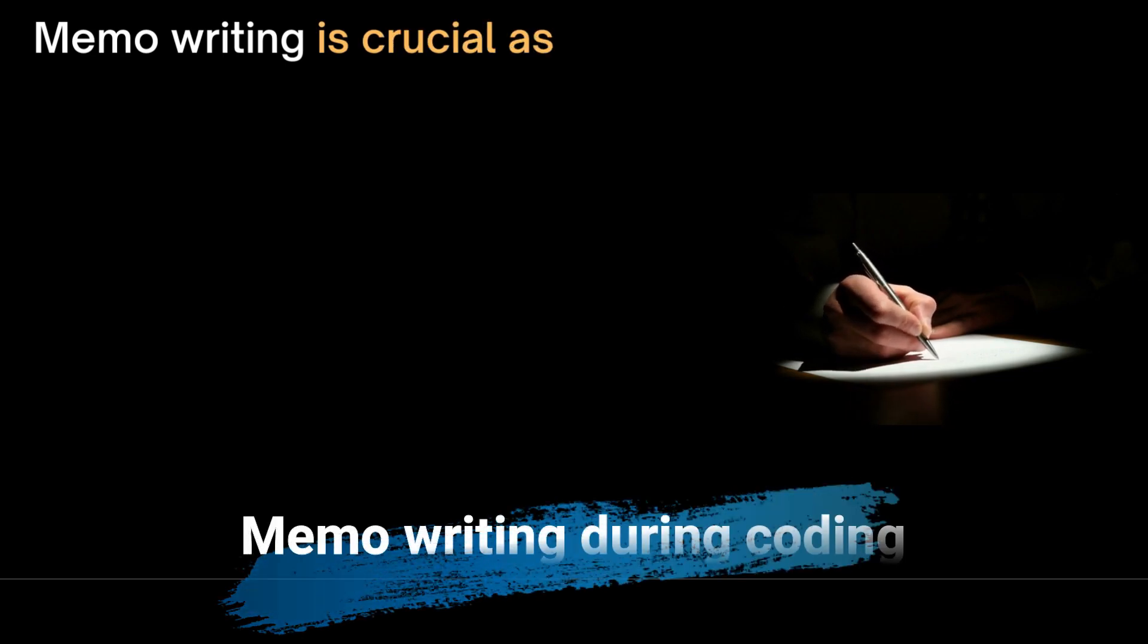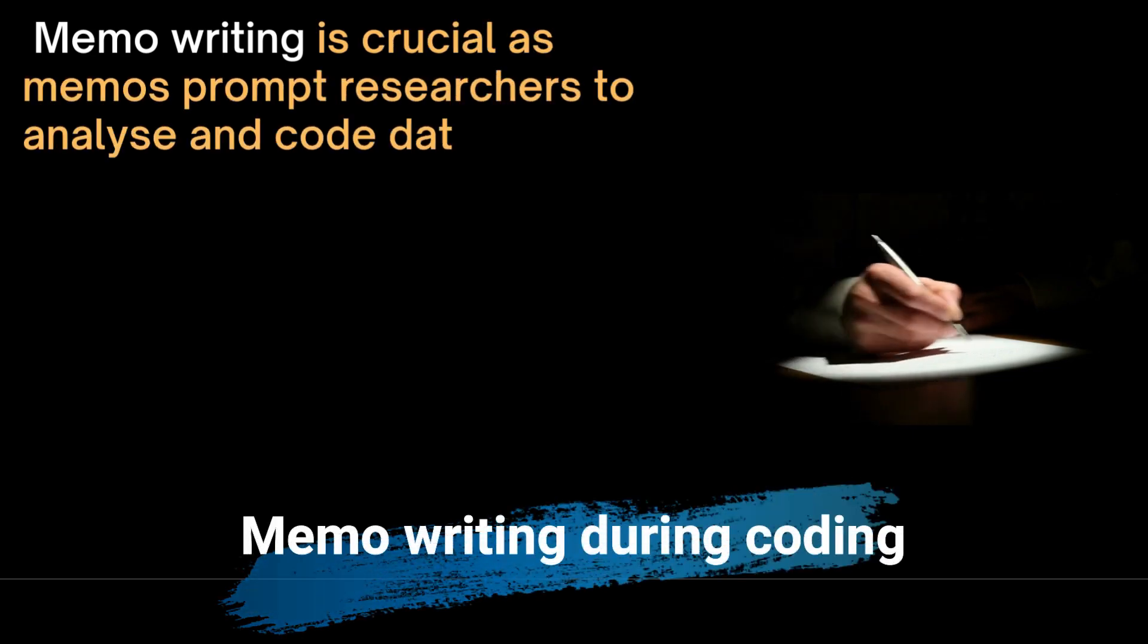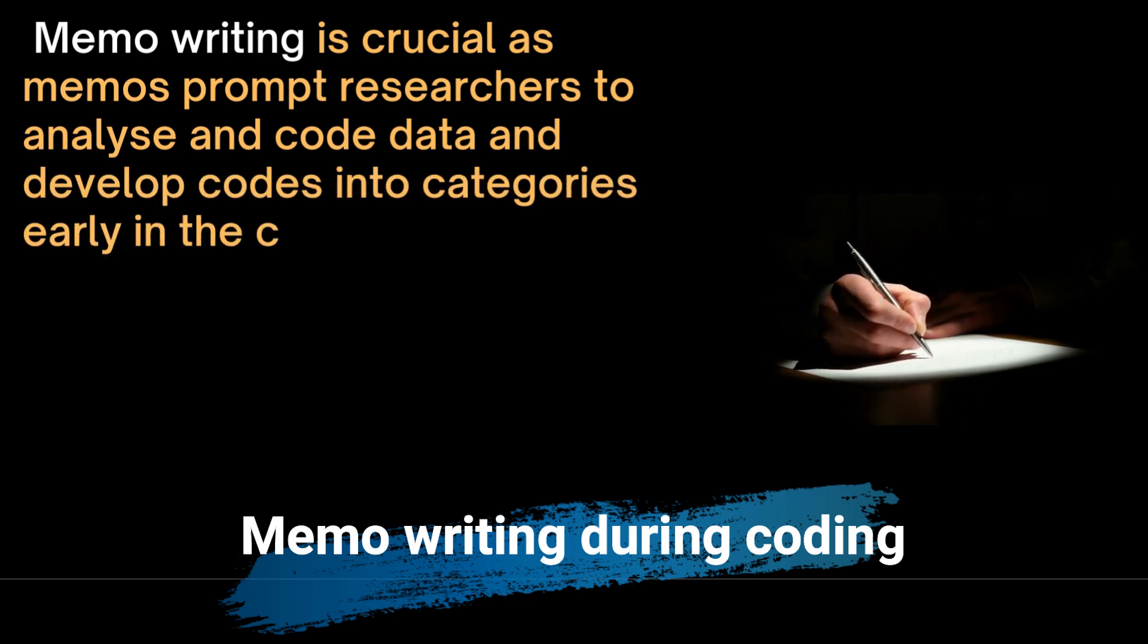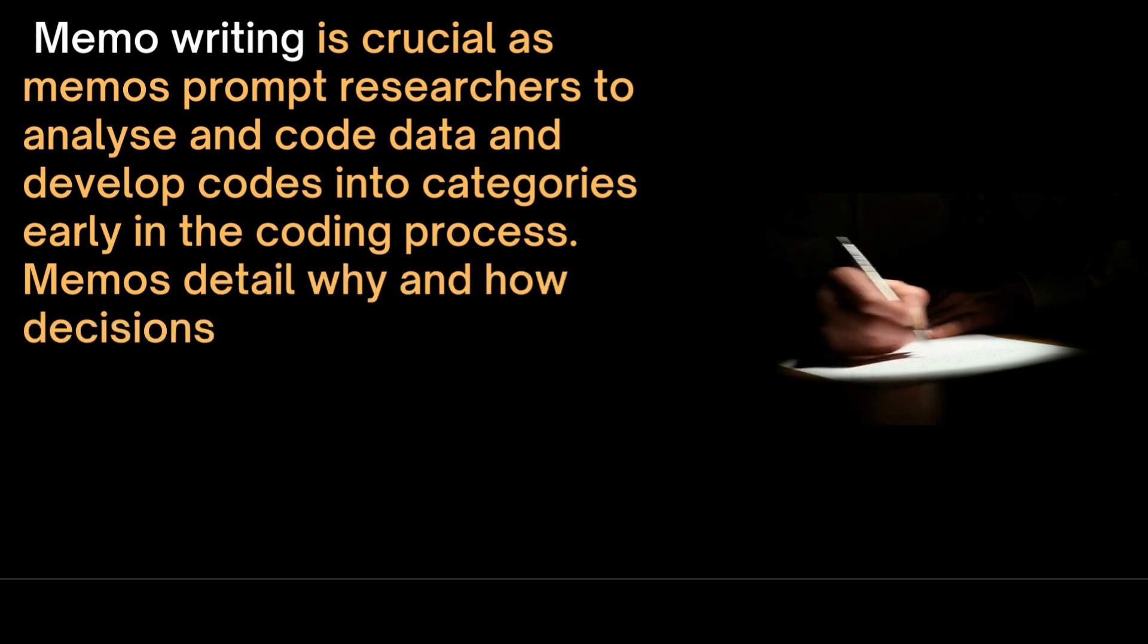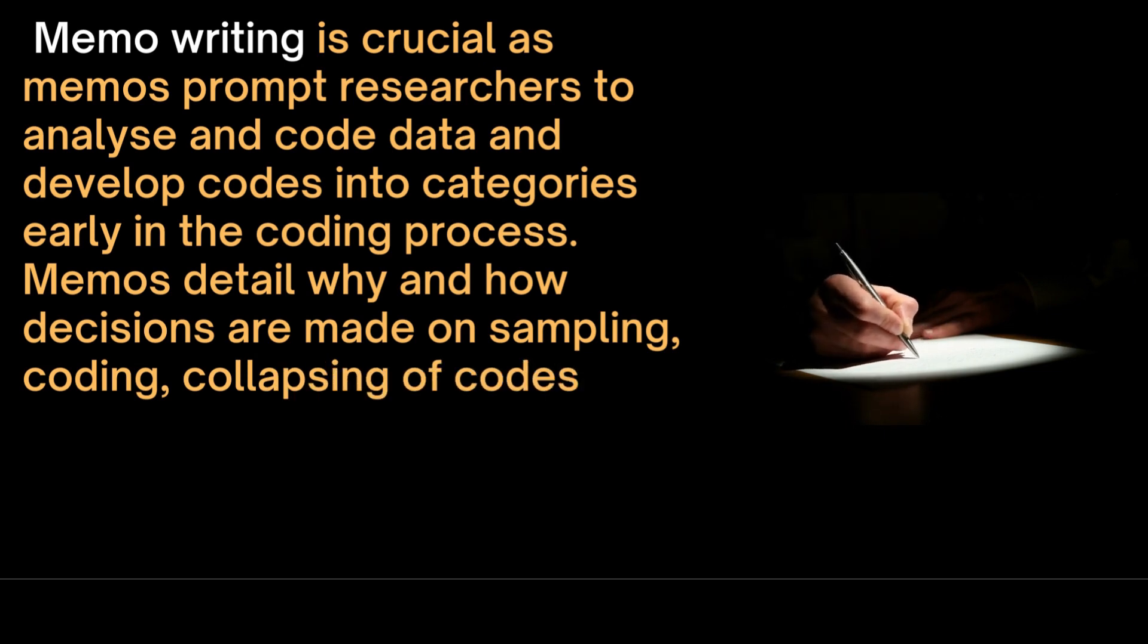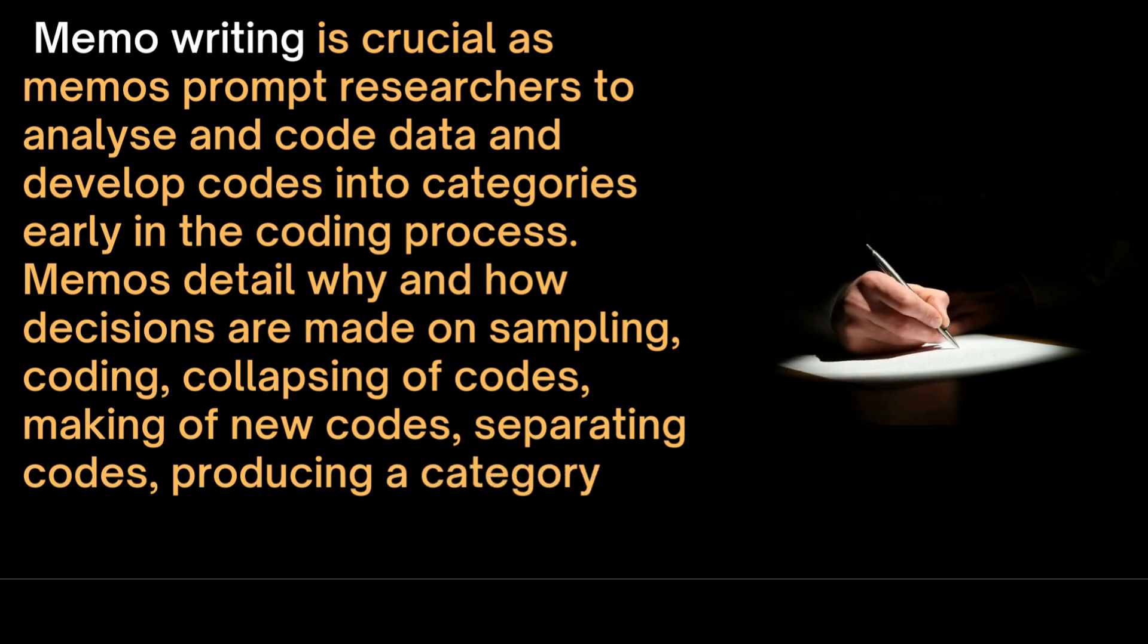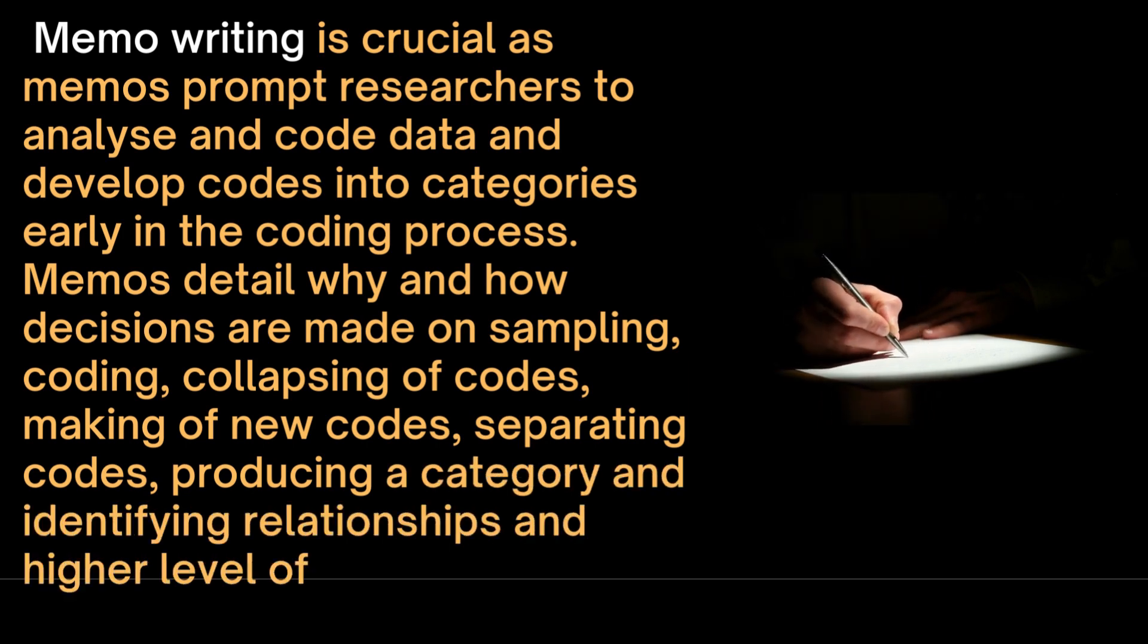Memo writing is a crucial process in this method. Memos prompt researchers to analyze and code data and develop codes into categories early in the coding process. Memos detail why and how decisions are made on sampling, coding, collapsing of codes, making of new codes, separating codes, producing a category and identifying relationships and higher level of analysis.